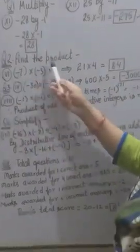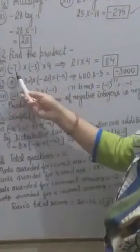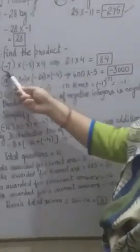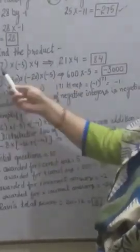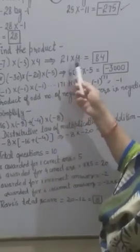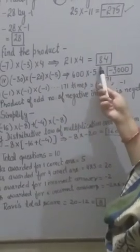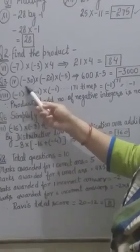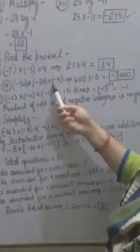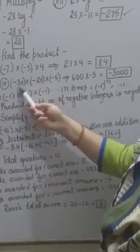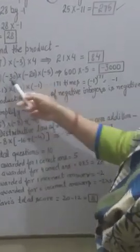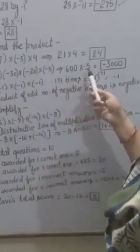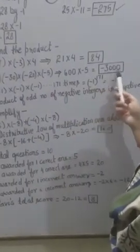Question 2, part 6: find the product of −7 × (−3) × 4. First, −7 × −3 = 21, then 21 × 4 = 84. Question 3, part 4: −30 × (−20) × (−5). First, −30 × −20 = 600 (minus × minus = plus), then 600 × (−5) = −3000.